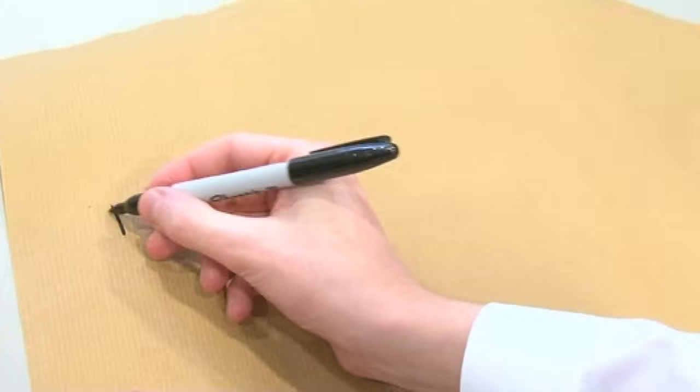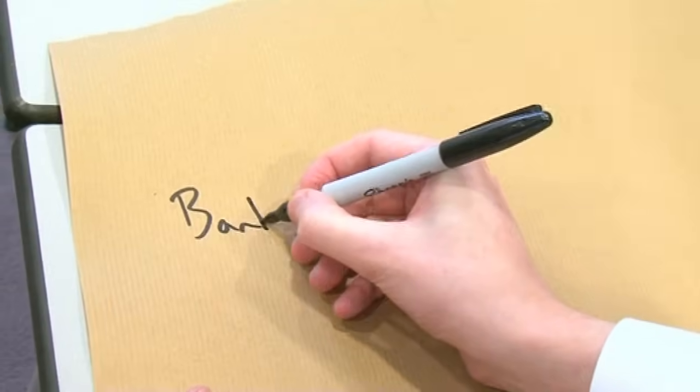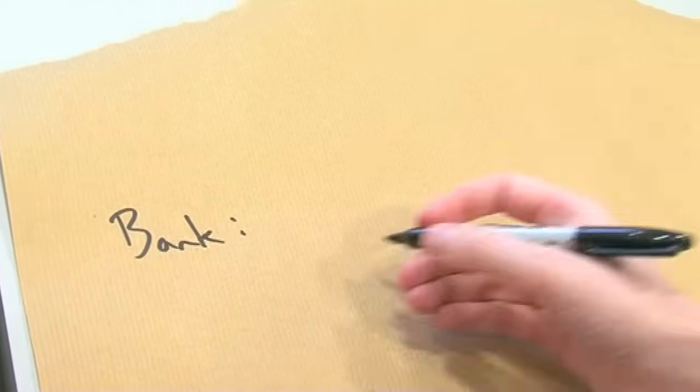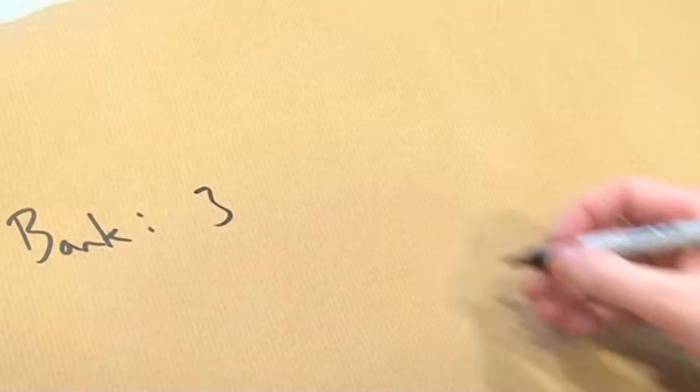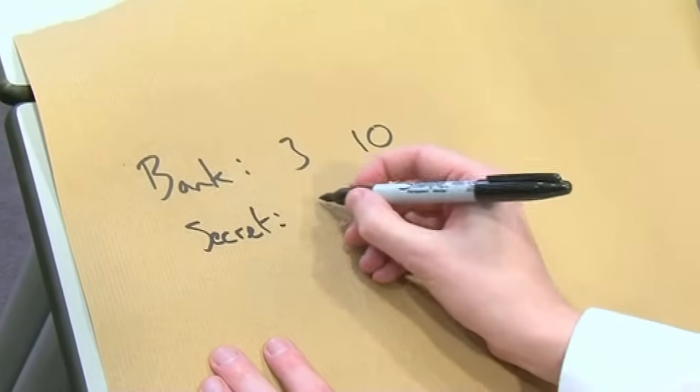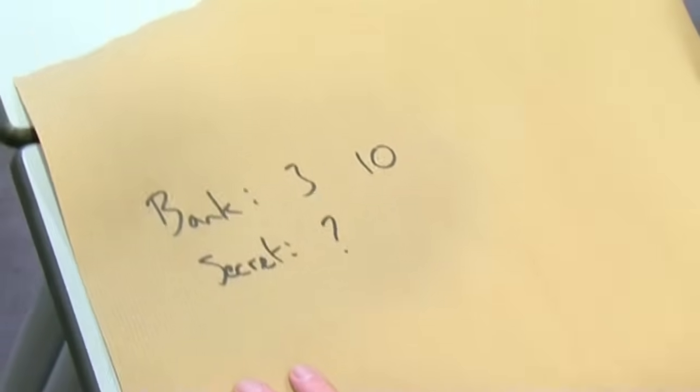First of all, I have to explain this with the smallest example I can, and then I'll show you why we use that massive number. Let's say you're the bank, and you give out two numbers. They're public, so everyone can know them. They're not secret numbers. I'm going to choose the number 3 and the number 10. The bank also has a secret number. For now, you don't know what it is. No one knows what that is. Only the bank knows what that secret number is.